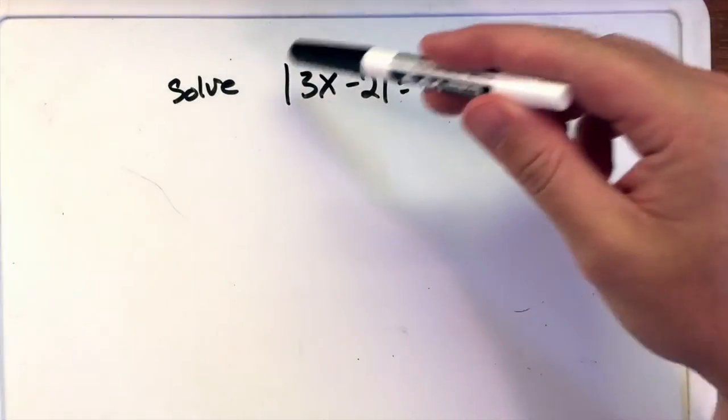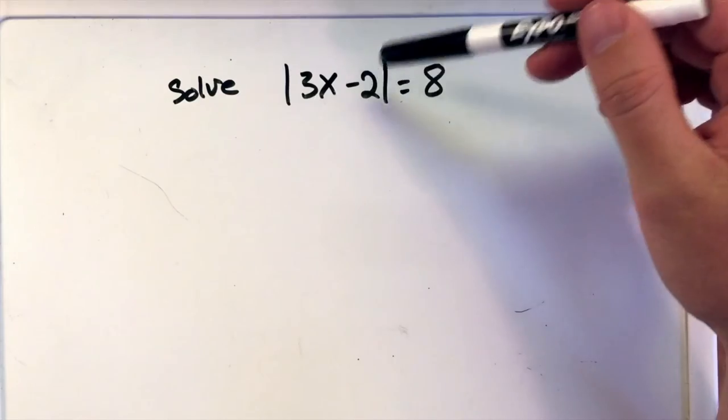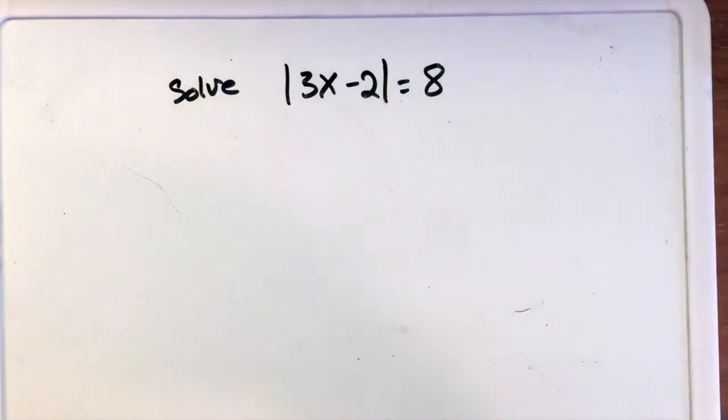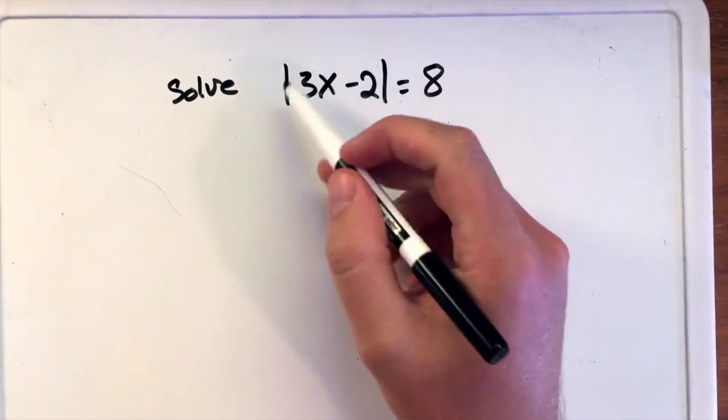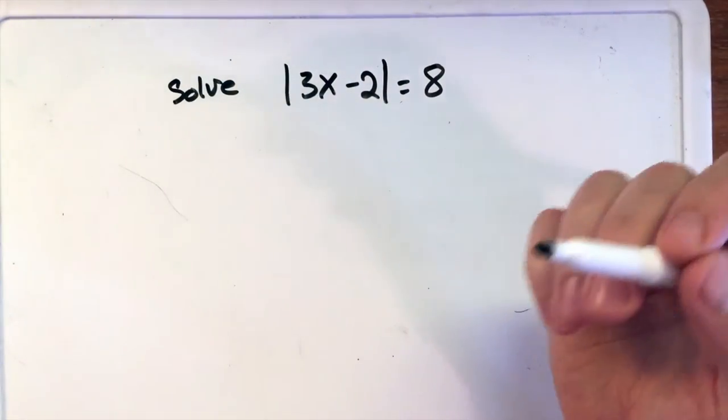Here we're going to solve the equation: the absolute value of 3x minus 2 equals 8. Now when we're going to solve this, absolute value means the distance from zero.